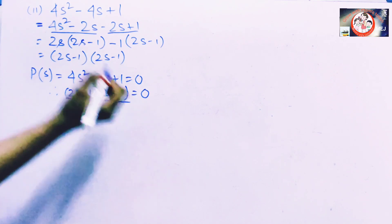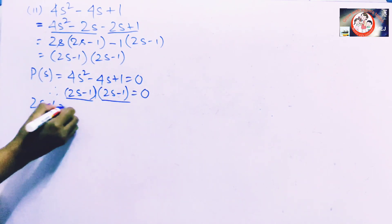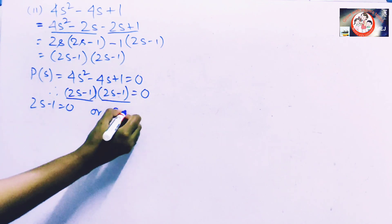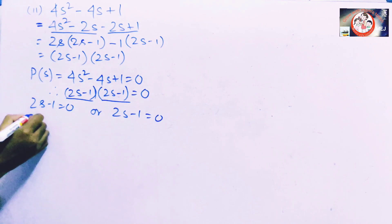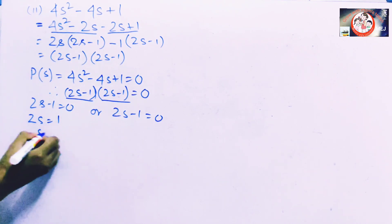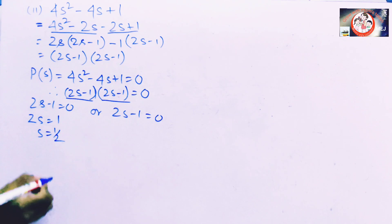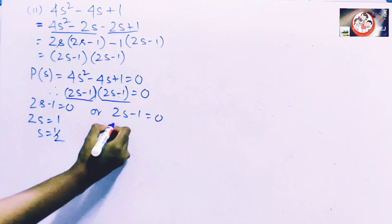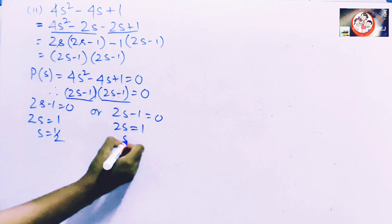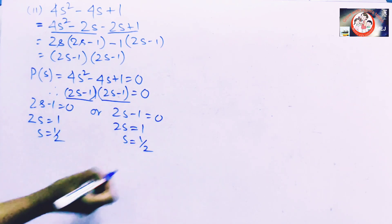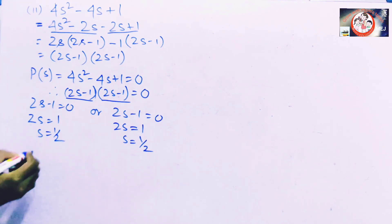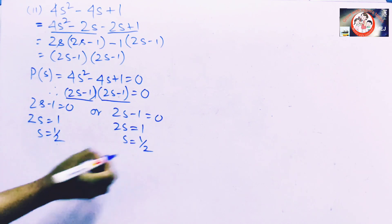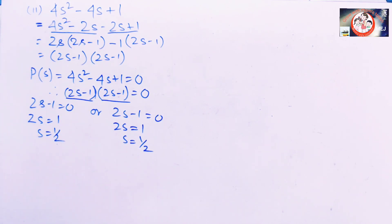We can also say that (2s minus 1)(2s minus 1) equals 0. So either 2s minus 1 equals 0 or 2s minus 1 equals 0. Then 2s equals 1 and s equals 1/2. This one also gives 2s equals 1 and s equals 1/2. So our zero value of this polynomial is 1/2 and 1/2.